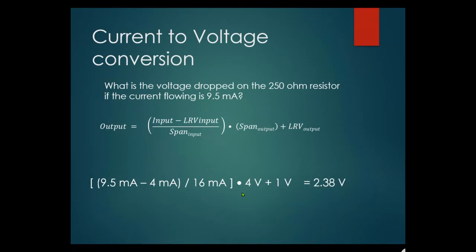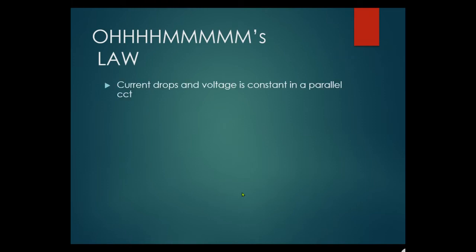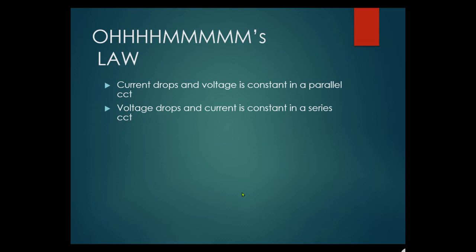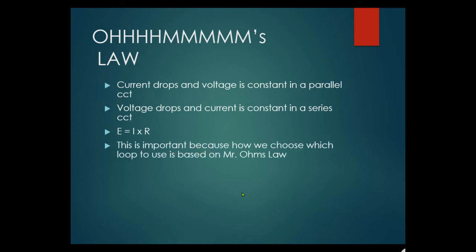Voltage equals milliamps multiplied by ohmic value. Ohm's law: E = I × R. In a parallel circuit, voltage is constant — each branch has the same voltage. In a series circuit, current is constant — current is the same everywhere in that series circuit. This is the basis for choosing which loop type to use. There are two types of signal transmission — voltage and current — let's compare them.